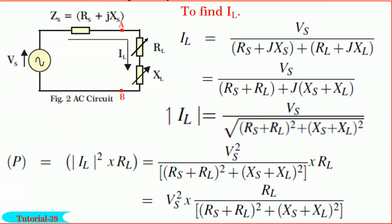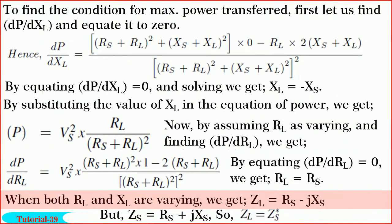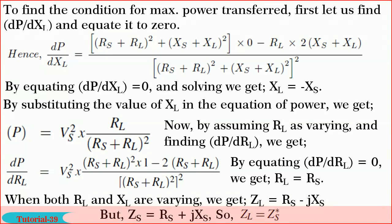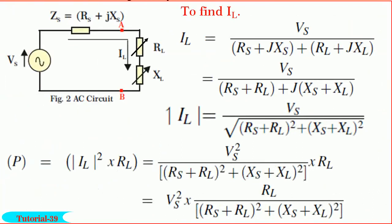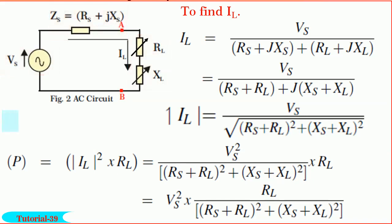So when both Rl and XL are varying, we get Zl equals Rs − jXs. But you know Zs equals Rs + jXs. So we can write the condition for maximum power transfer in this case as Zl equals Zs conjugate. Therefore, the Maximum Power Transfer Theorem for AC circuits can be stated as: when the source is AC and the source impedance is complex and the load impedance is also complex, if both resistance and reactance parts of the load are varying, the condition for maximum power transferred across the load is Zl equals Zs conjugate. Hope you got the skill of writing the answer for such a question.